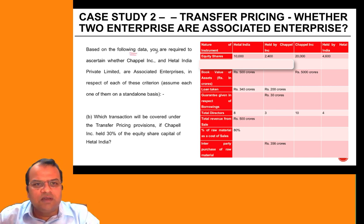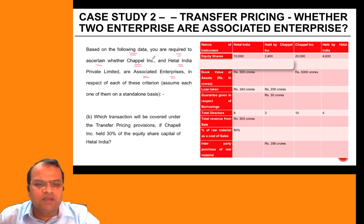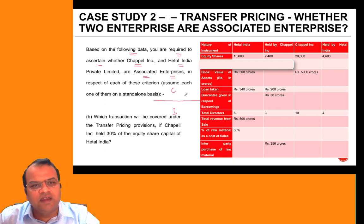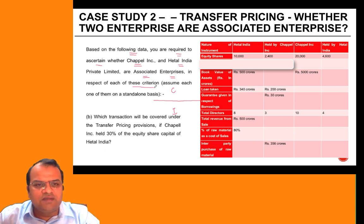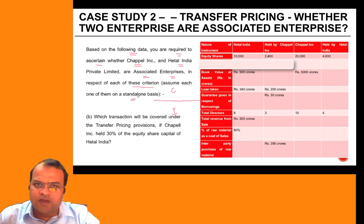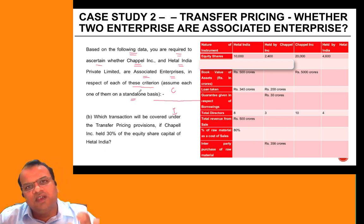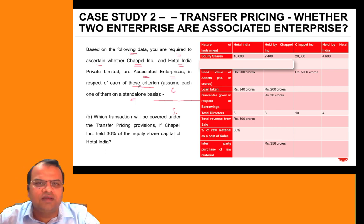Based on the following data, you are required to ascertain whether Chapel Link and Hathal India Private Limited are associated enterprises. In respect of each of these criteria, assume each one on a standalone basis — you need to see each transaction independently, without considering the others, to determine whether the two entities are actually associated enterprises.